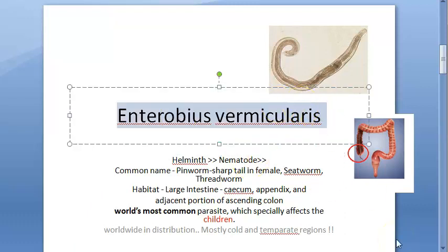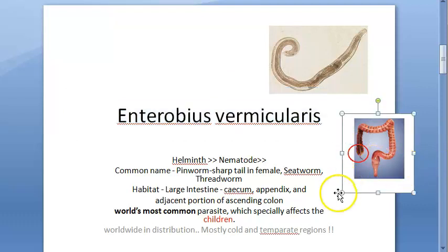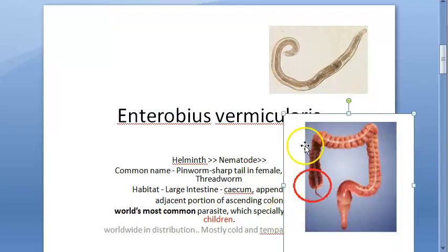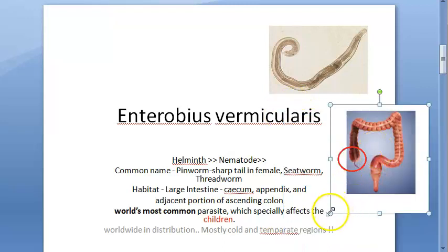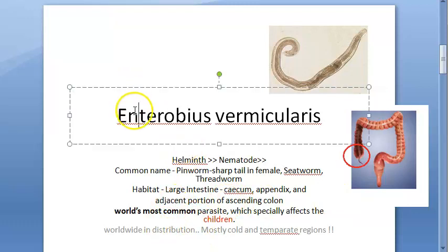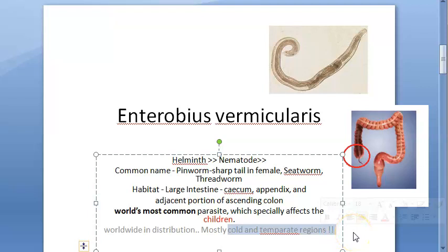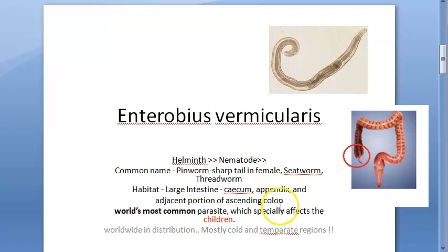Enterobius vermicularis is a very common parasite, especially in children. Its habitat is the large intestine — particularly the cecum, appendix, and ascending colon — though it migrates out of the anus. It is found a lot in cold and temperate countries, such as America, and though it is worldwide in distribution, it strangely does not favour the tropics.